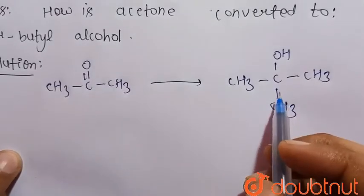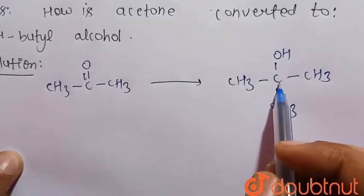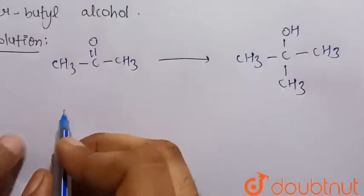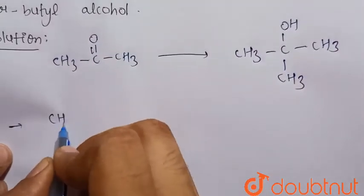It has three carbons and four carbons. It has a ketone and it has an alcohol group. Acetone can be converted into tertiary butyl alcohol by treating with the Grignard reagent.